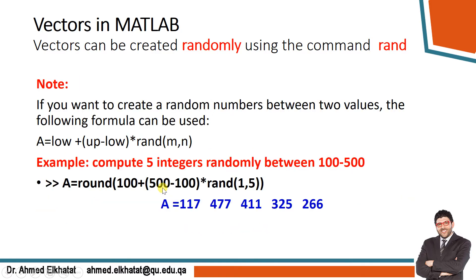Suppose you want random numbers between two values, for example from 100 to 500 instead of zero. There is a useful equation: low + (up - low) * rand. To create five random integers from 100 to 500: a = round(100 + (500 - 100) * rand(1, 5)). This gives five random integers between 100 and 500 — repeat it and you get different numbers each time.